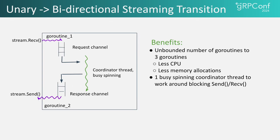So we transitioned from the unary to the bidirectional streaming model using three threads and two channels. Two of those threads are blocking Go routines: one responsible for receiving requests and the other for sending back responses. The third Go routine picks up requests to process them and puts results in the response channel. To avoid being scheduled off the CPU when there's no request to process, it engages in busy spinning. This approach resolves the issue of an unbounded number of Go routines and delivers responses in the same order as requests come in, helping prevent unwanted tail latency spikes.